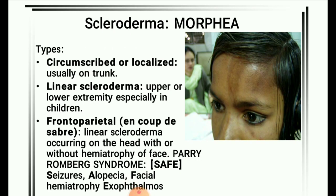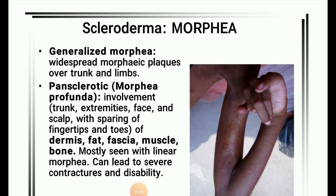Morphea types: circumscribed or localized, usually on trunk; linear scleroderma of upper or lower extremity, especially in children; frontoparietal and en coup de sabre — linear scleroderma occurring on the head with or without hemiatrophy of the face (Parry-Romberg syndrome). Mnemonic SAFE: Seizures, Alopecia, Facial hemiatrophy, Exophthalmos — symptoms of Romberg syndrome. Generalized morphea shows widespread morphic plaques over trunk and limbs. Pansclerotic morphia profunda involves trunk, extremities, face, and scalp, sparing fingertips and toes, affecting dermis, fat, fascia, muscle, and bone, and can lead to severe contractures and disability.